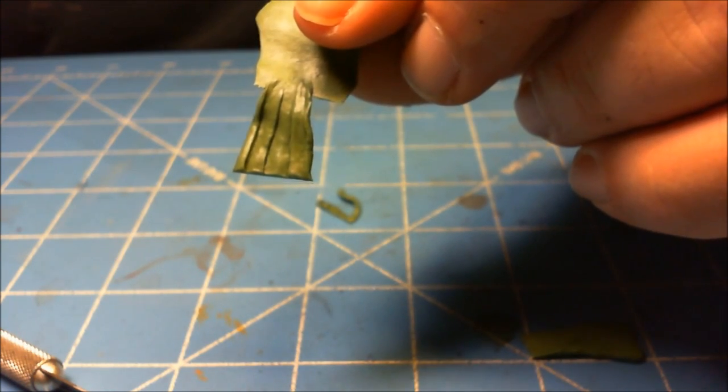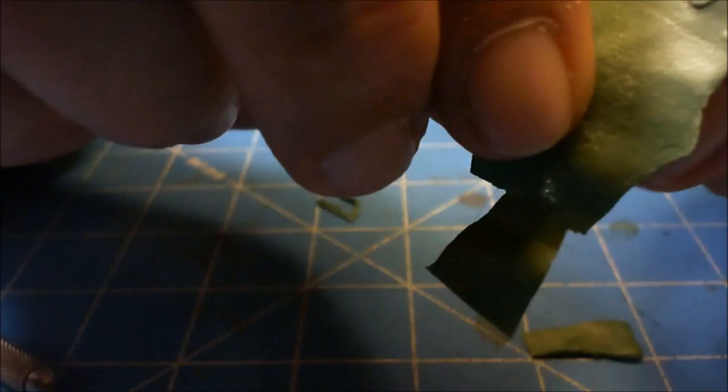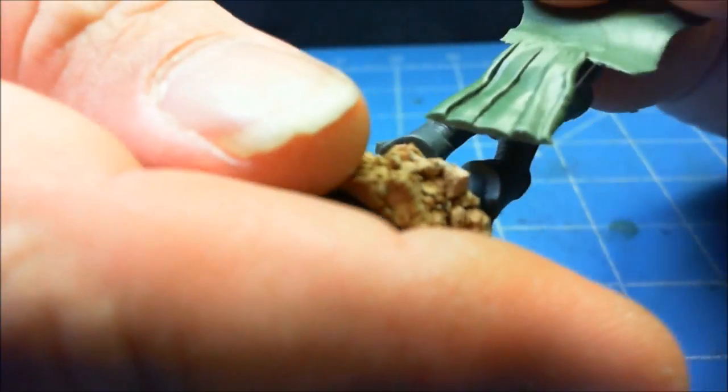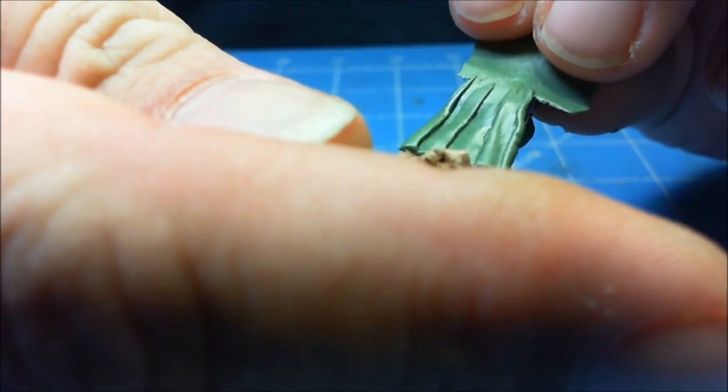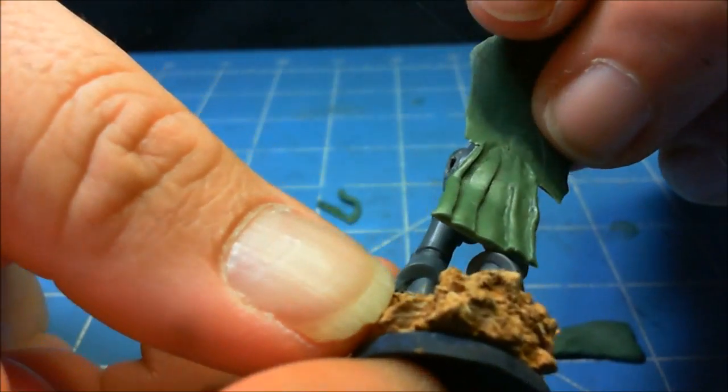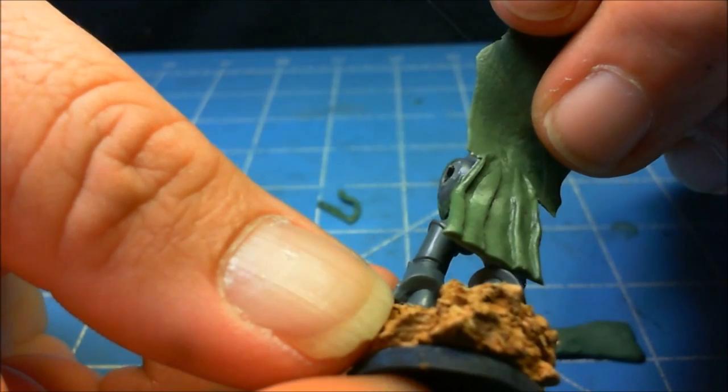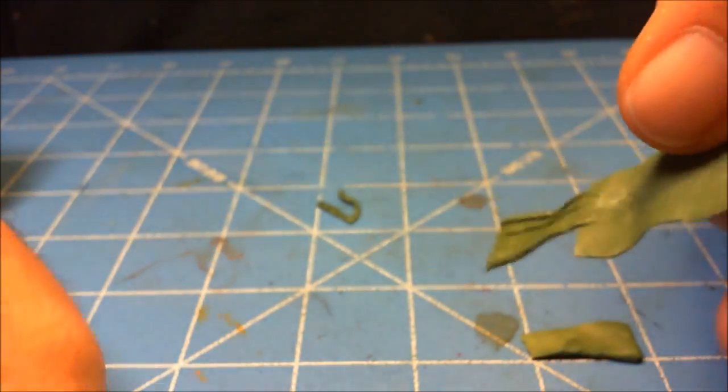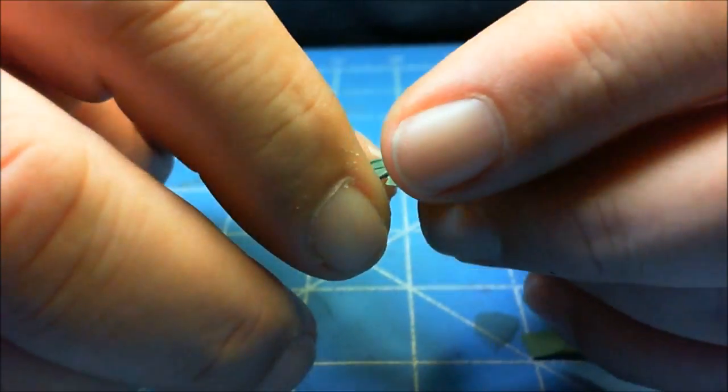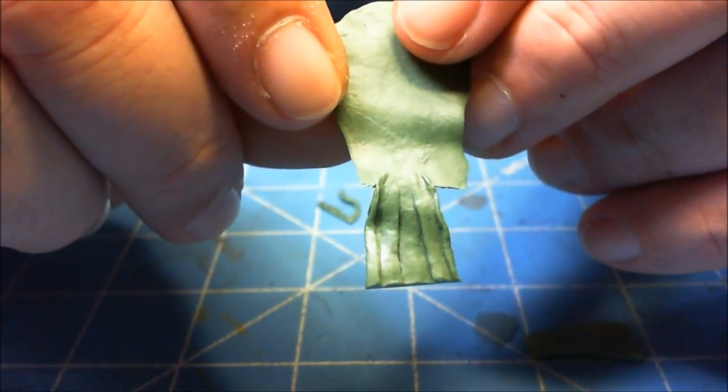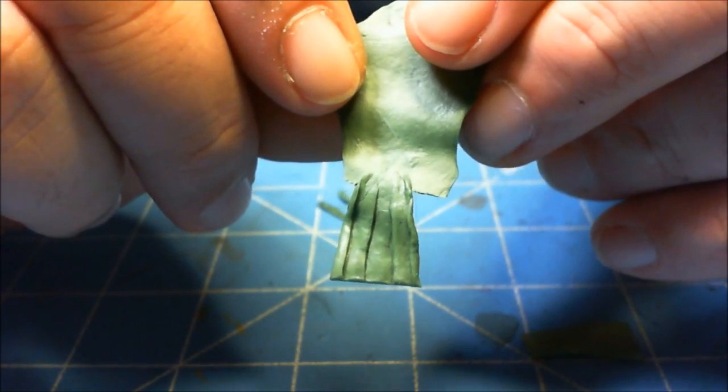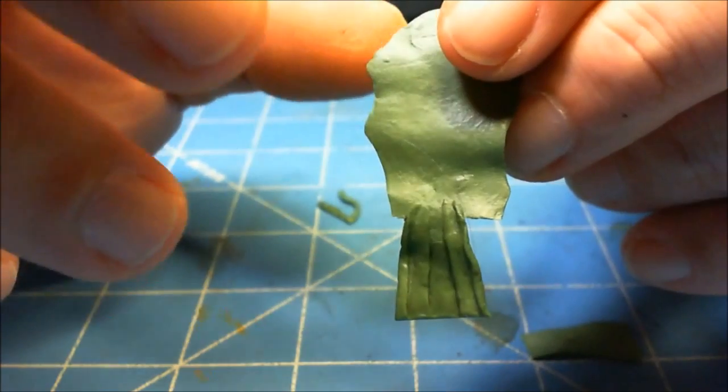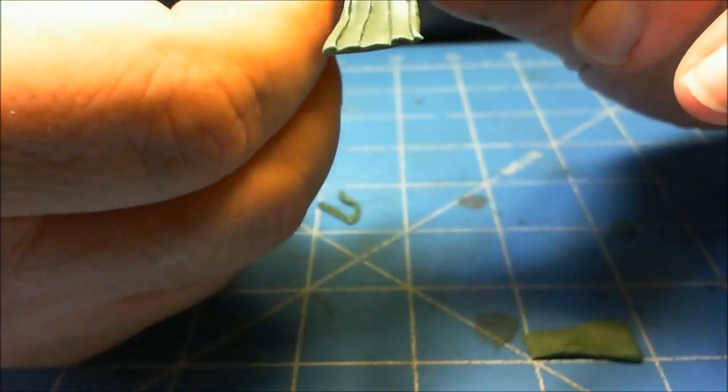And it'll sit there on his back. So that would just be a general way I would make a cloth piece, by taking the sausages and smoothing it in and making it flow and little ridges and stuff.